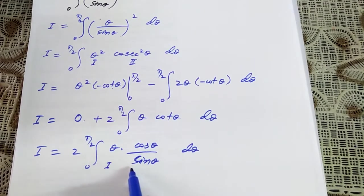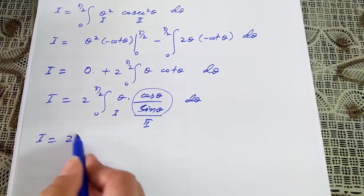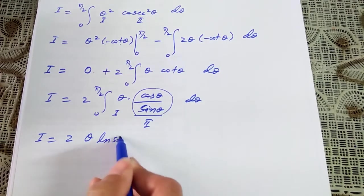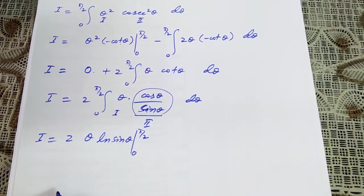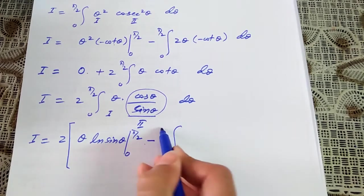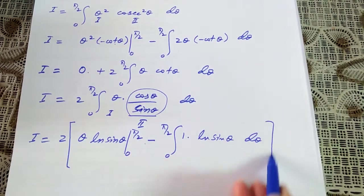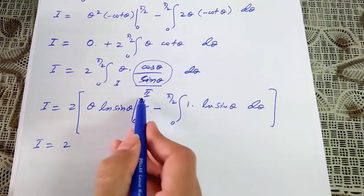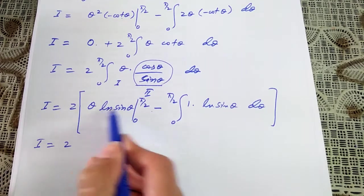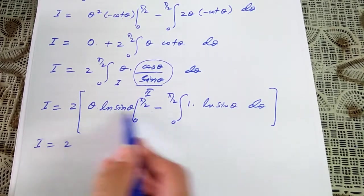Applying integration by parts again, taking θ as the first function and cos(θ)/sin(θ) as the second. The integral of cos(θ)/sin(θ) is ln(sin θ). So i equals 2 times [θ ln(sin θ) from 0 to π/2, minus the integral from 0 to π/2 of 1 times ln(sin θ) dθ]. Applying the limits: at the upper limit, ln(sin(π/2)) equals ln(1) equals 0; at the lower limit 0, the term is also 0. So the boundary term vanishes, leaving i equals negative 2 times the integral from 0 to π/2 of ln(sin θ) dθ.